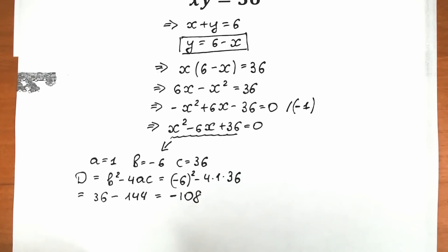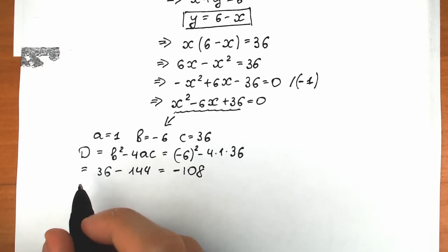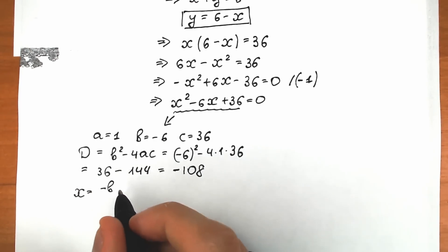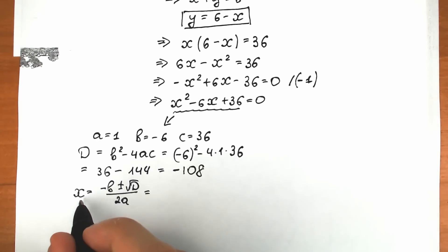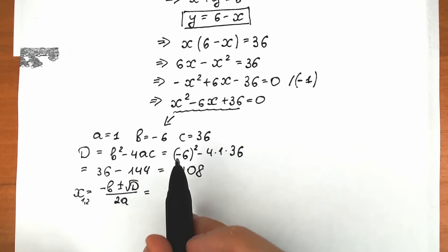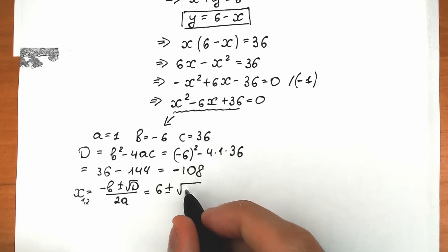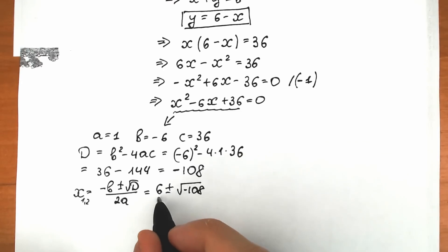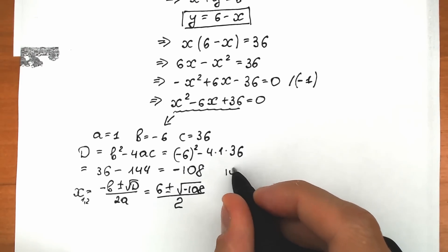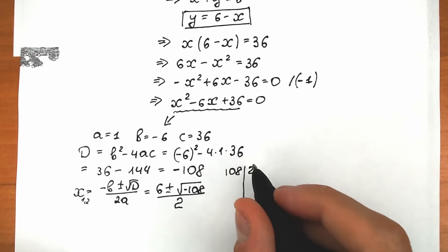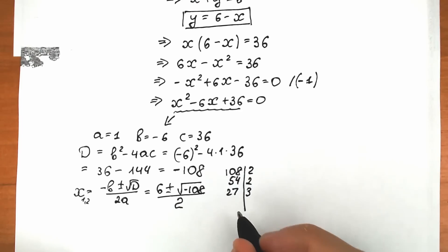Since the discriminant is negative, we have two complex roots. Using the quadratic formula x equals (minus b ± √D) / 2a, we get x equals (6 ± √(minus 108)) / 2. Now let's simplify √108: dividing 108 gives us 2 × 2 × 3 × 3 × 3, so we can write 108 as 2² × 3² × 3.